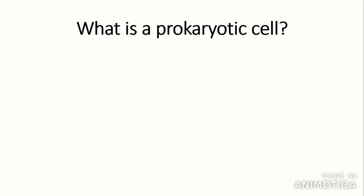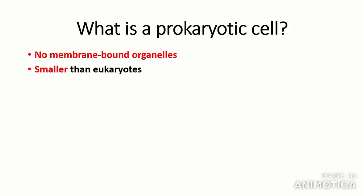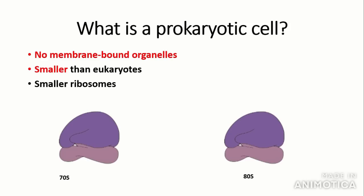Now we are going to move on to prokaryotic cells. What is a prokaryotic cell and what is the difference between prokaryotic and eukaryotic cells? The main thing is that prokaryotic cells do not contain membrane-bound organelles such as mitochondria and nuclei. They are also often smaller than eukaryotes and include cells such as bacteria. They also have smaller ribosomes — prokaryotic ribosomes are 70S in size and eukaryotic ribosomes are 80S. You just need to know that prokaryotes have smaller ribosomes.